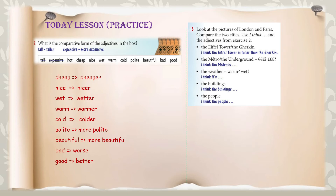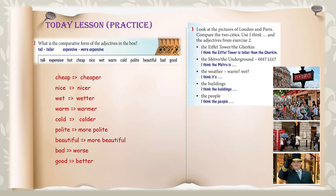Now for the next practice. Look at the pictures of London and Paris and compare the two cities using 'I think' and the adjectives from Exercise 2. The phrase 'I think' means you're not certain about the reality — it's just your opinion. The first one has been done as an example: the Eiffel Tower is taller than the building shown for London.